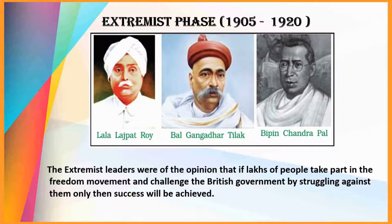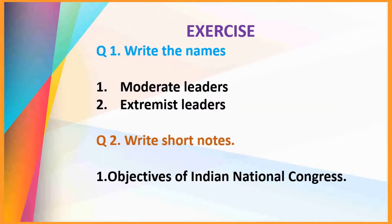The rest of the lesson will be seen in the next video. Now, let us come to the exercise. The first question is: write the names. First — moderate leaders. The moderate leaders were Gopal Krishna Gokhale, Surendranath Banerji, and Feroze Shah Mehta. The second one — extremist leaders. The extremist leaders were Lala Lajpat Rai, Bal Gangadhar Tilak, and Bipin Chandra Pal.